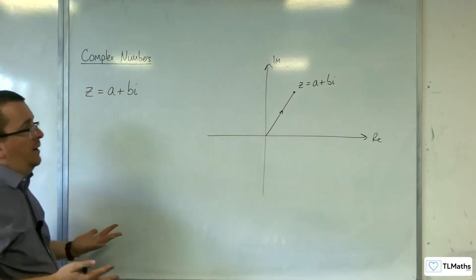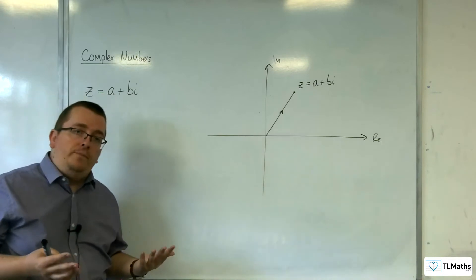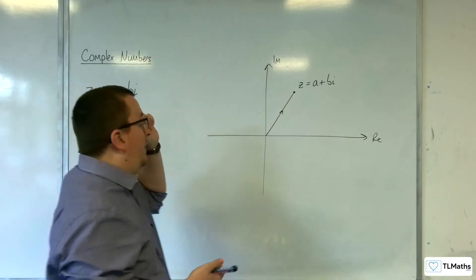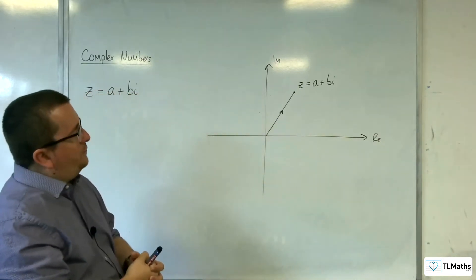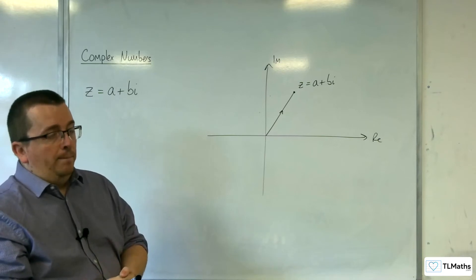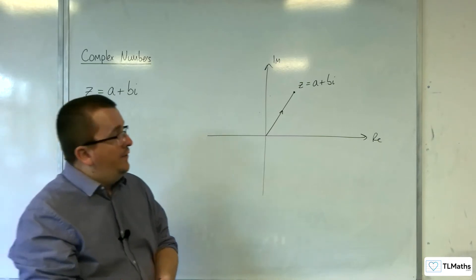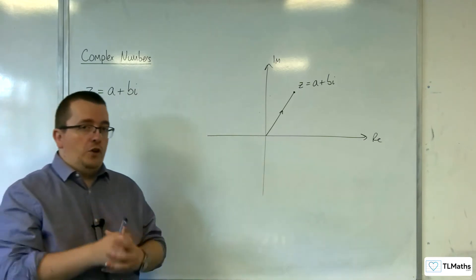The complex number Z equals A plus Bi also has those two bits of information. So it has a certain length, how long that complex number actually is, and also a direction in which it's pointing. We refer to these as the modulus and argument of the complex number.